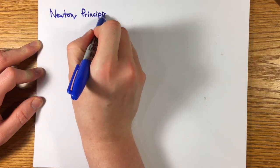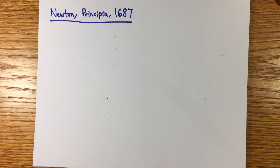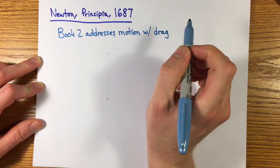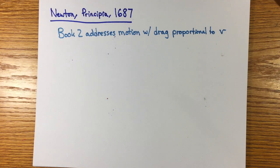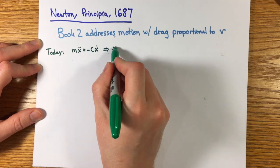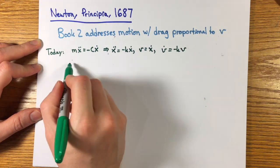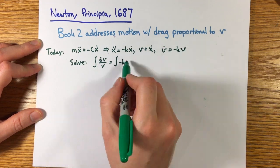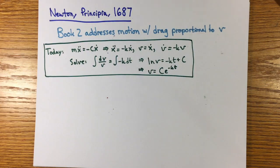Newton considered the equation of an object whose motion is resisted by a drag force proportional to its velocity in the Principia, published in 1687. At the start of book two, he correctly derives the geometric decay and gives an account of terminal velocity. Here's an even simpler equation of drag without the constant force of gravity, x double dot equals minus kx dot or v dot equals minus kv. Today we would solve this differential equation using the fundamental theorem of calculus and our knowledge of the logarithm and exponential.